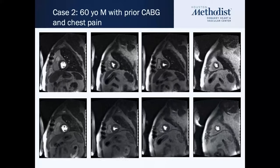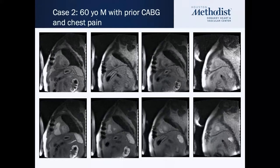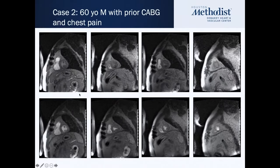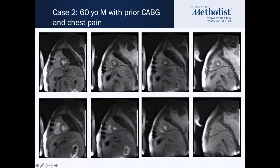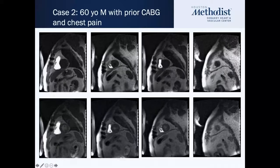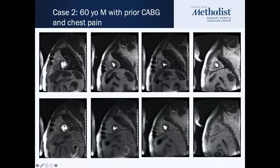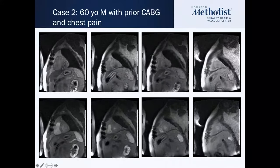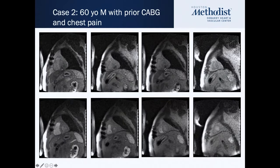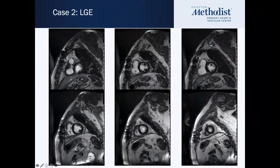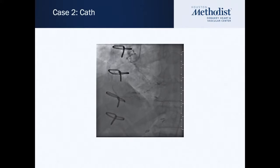Another case: a 60-year-old man with a prior bypass who comes in with chest pain. Stress on top, rest on the bottom. There is a perfusion defect extending from the subendocardial area epicardially, persisting for multiple heartbeats — an important parameter — fitting a coronary territory in the inferior wall extending into the mid and apical inferior wall. On LGE, there is a small subendocardial infarct. Similar to the previous case, there's an infarct with peri-infarct ischemia. The patient's bypass to the RCA was occluded, his native RCA was also totally occluded, and he was treated medically.